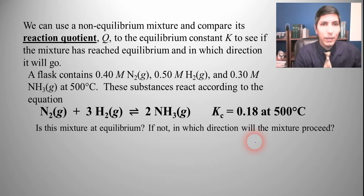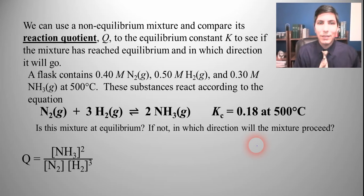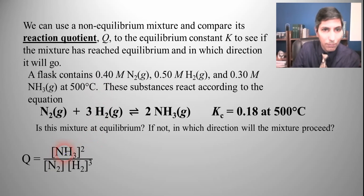So here we have a flask that contains 0.4 molar nitrogen gas, 0.50 molar hydrogen gas, and 0.3 molar ammonia gas at 500 degrees Celsius. And they're going to react according to that equation. The reaction quotient is determined in exactly the same way as the equilibrium constant is determined. It's products over reactants raised to the power of the coefficient.